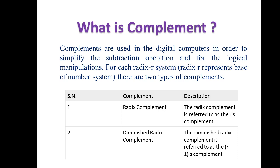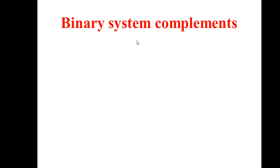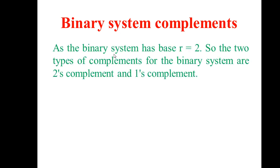In the binary system the base is 2, so the radix complement is the 2's complement and the diminished radix complement is the 1's complement. The binary system therefore has two types of complements: 2's complement and 1's complement.